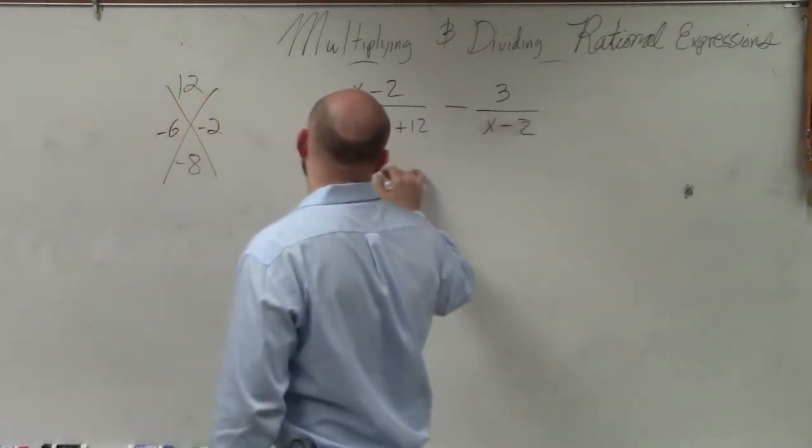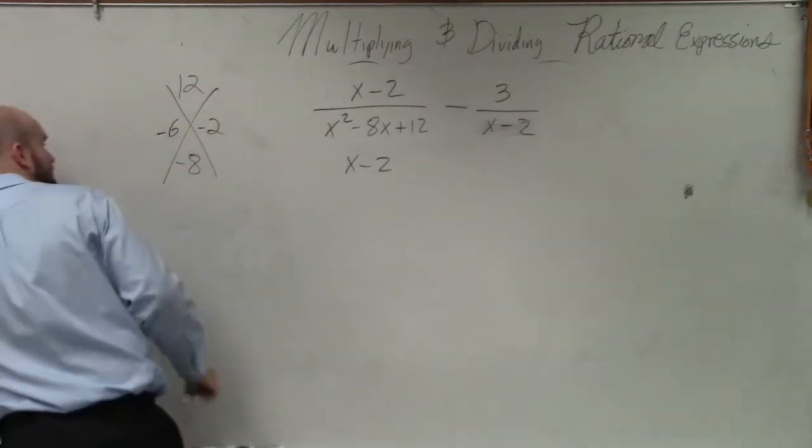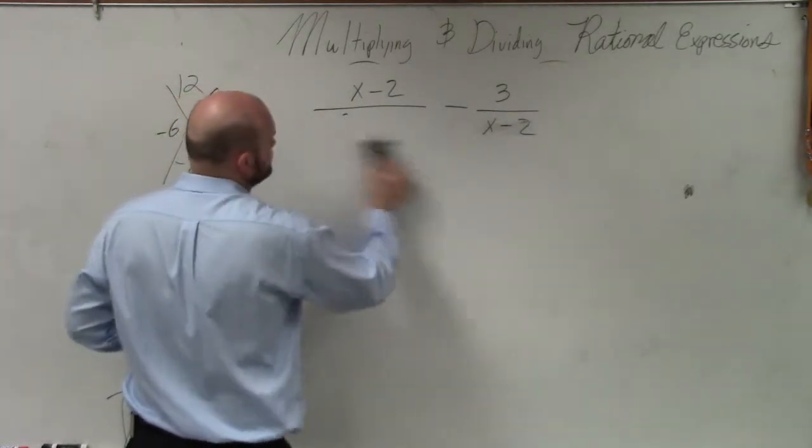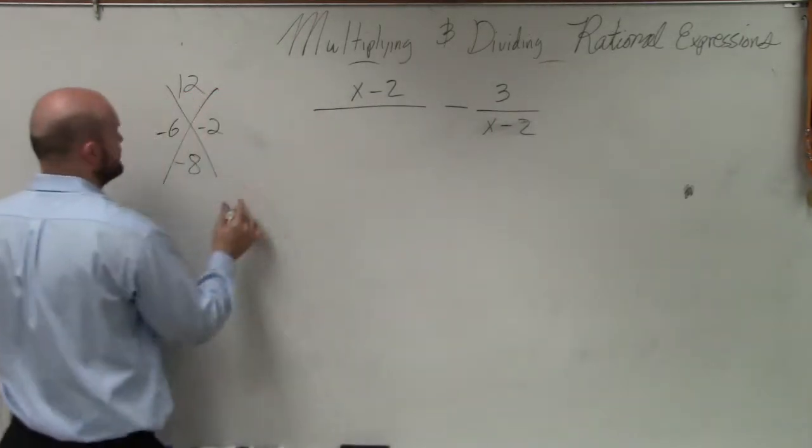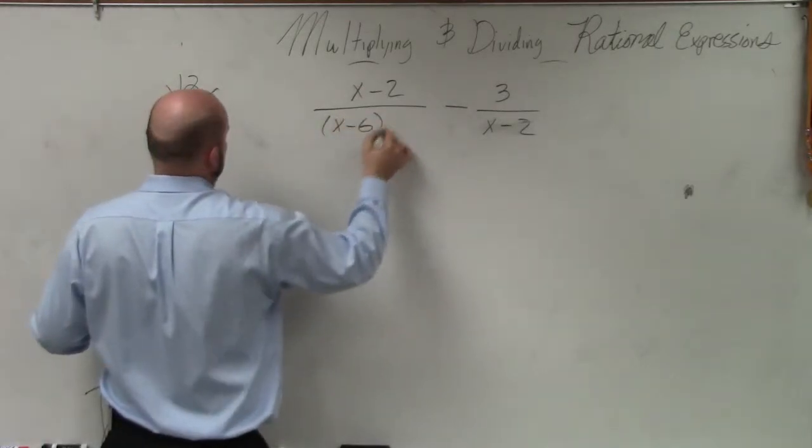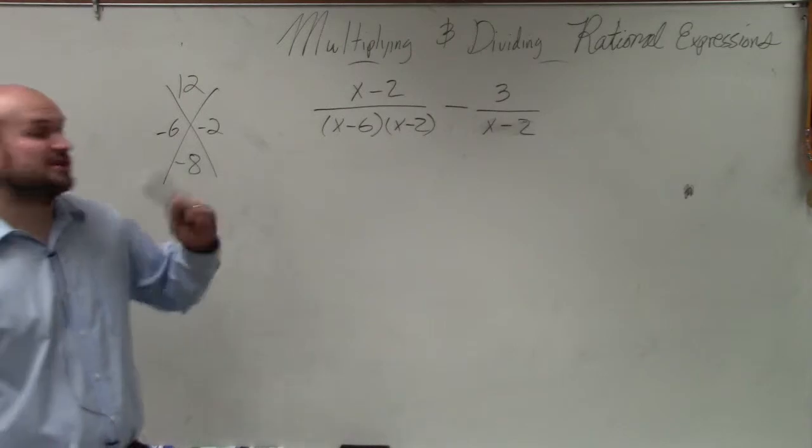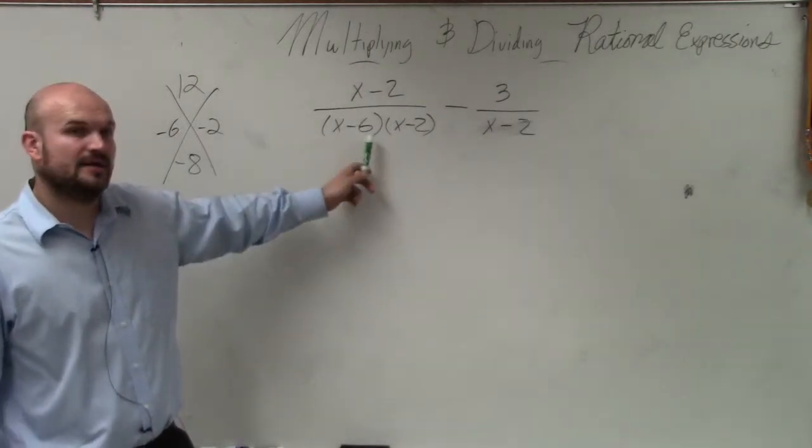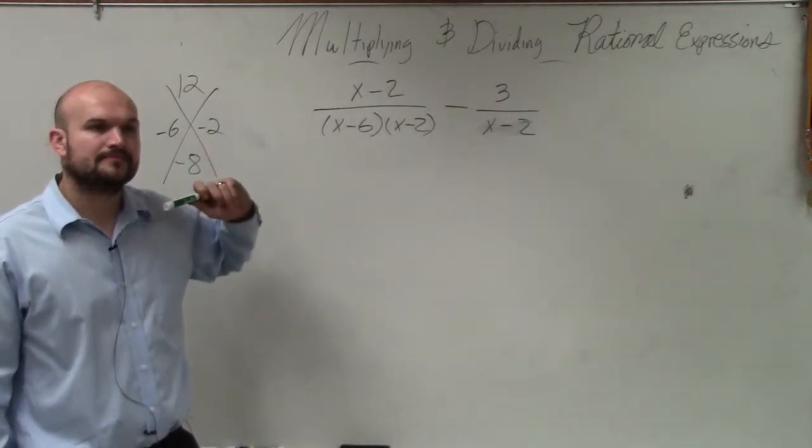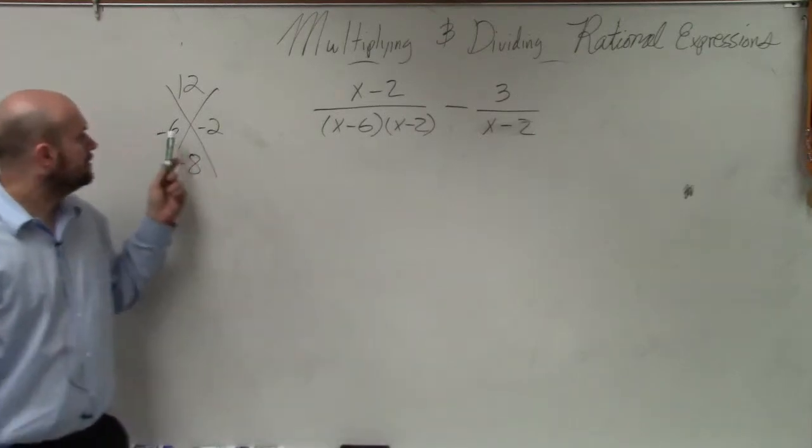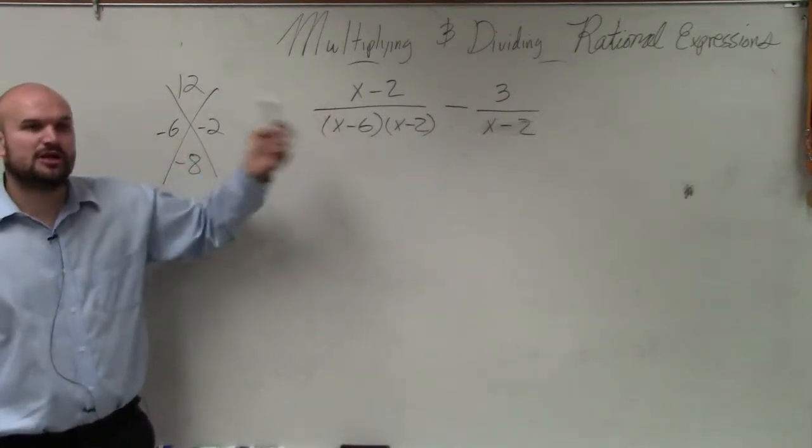So therefore I rewrite this. Actually, I'm going to save a little work. I'm going to rewrite my denominator in the factored form. I am showing it step by step, just rewriting the denominator in factored form. 8 came from the middle term of your polynomial.